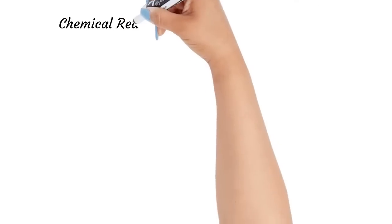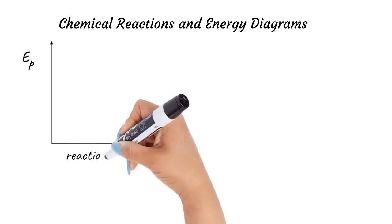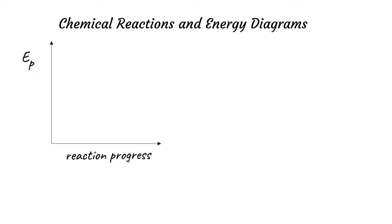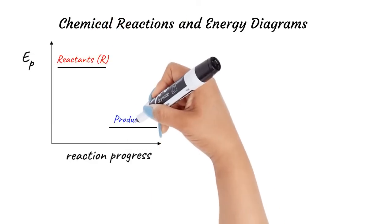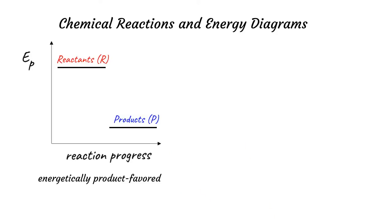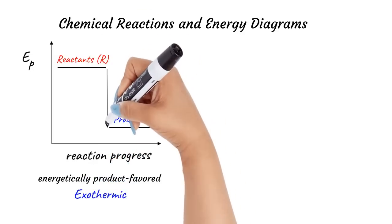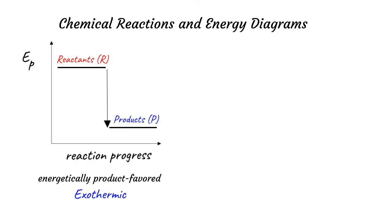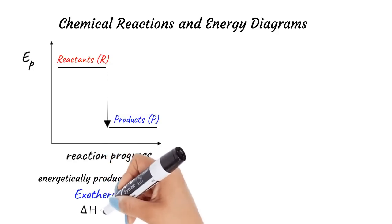During a chemical reaction, the reactants are transformed into products. If the products are more energetically stable than the reactants — in other words, reactants have higher potential energy than products — then the reaction is energetically product favored. These reactions are called exothermic reactions, as energy is released when you go from high potential energy reactants to low potential energy products. Thus, exothermic reactions will have a negative delta H.